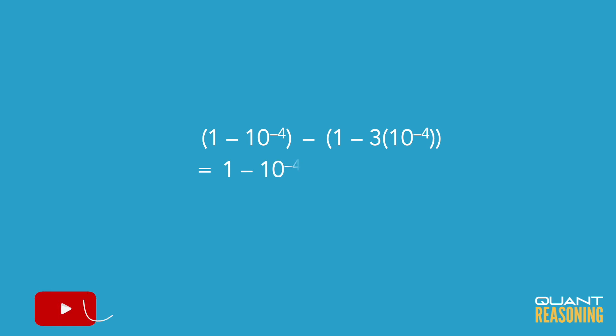Now remembering that minus minus turns into plus, in the end of the day we just have negative 10 to the negative 4 plus 3 times 10 to the negative 4, which is 2 times 10 to the negative 4, and that's the correct answer.